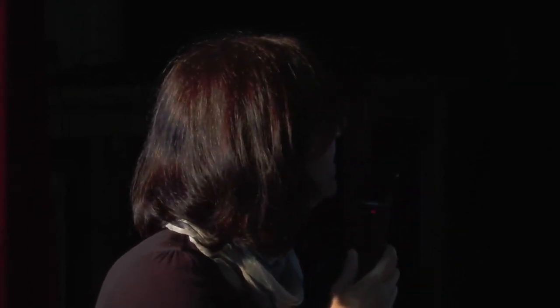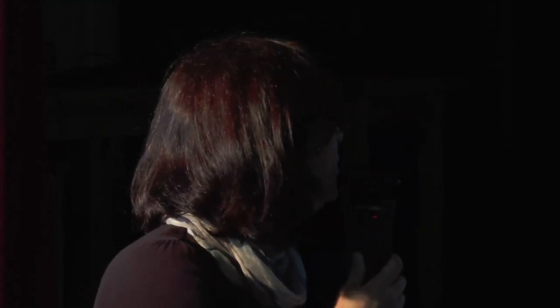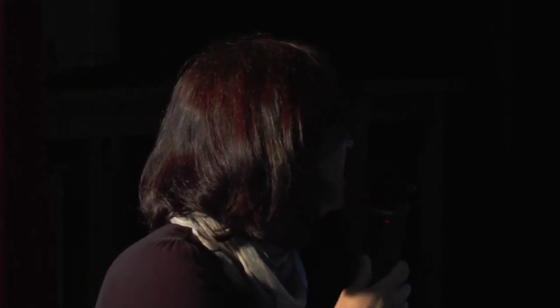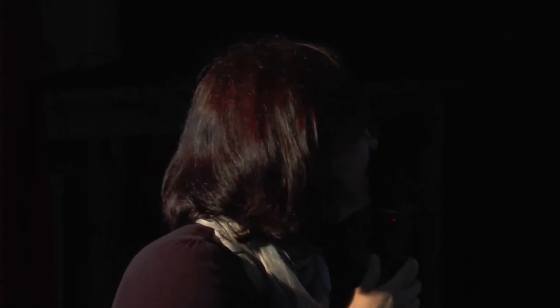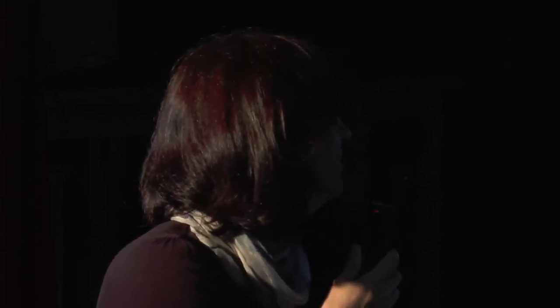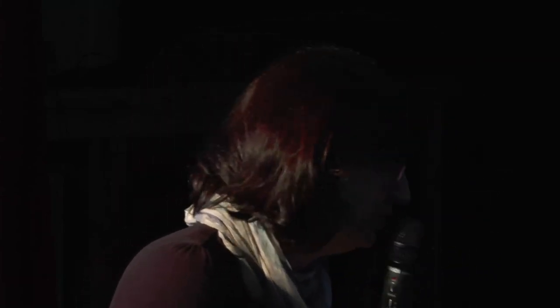In each of the seven centers, there is local production of forecasts up to four days with hourly outputs. The pollutants provided are ozone, NO2, CO, SO2, particulate matter PM2.5 and PM10. Recently we have also added the forecast of birch pollen. By combining forecast and observations, we provide analysis for the past 24 hours. Most models provide ozone analysis, and some models also have CO, NO2, SO2, PM2.5, or PM10.